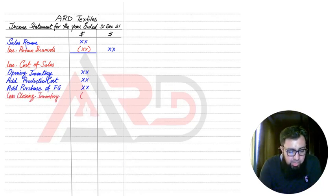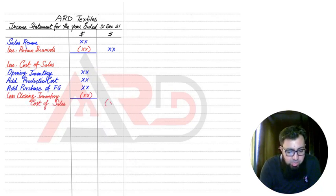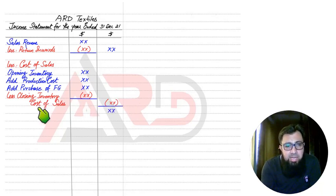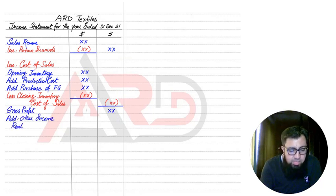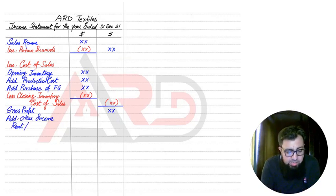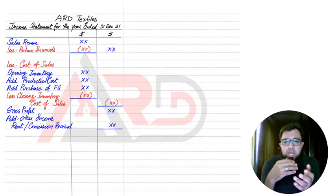Then we have closing inventory — again, this is also for finished goods. The final figure after adding and subtracting these items is known as cost of sales. We write cost of sales twice: once as a heading and once in front of the final amount. If we deduct cost of sales from the net sales figure, we get gross profit. After gross profit, we have other incomes — any income other than producing and selling goods. It can be rent received, commission received, a decrease in provision for doubtful debts, gain on disposal of non-current assets, or bad debts recovered.